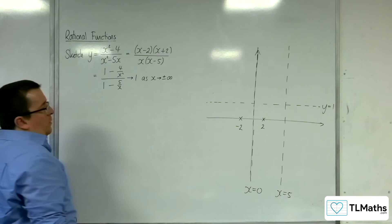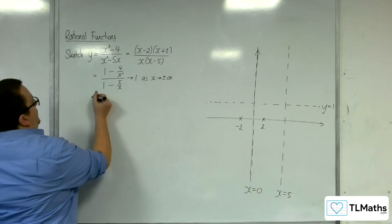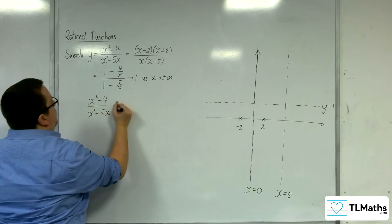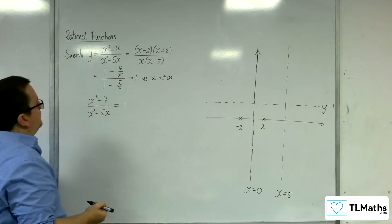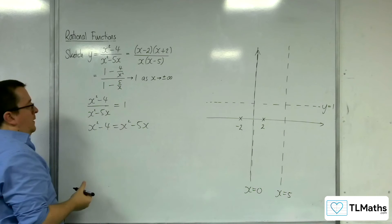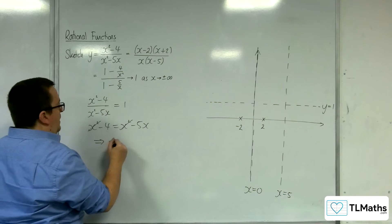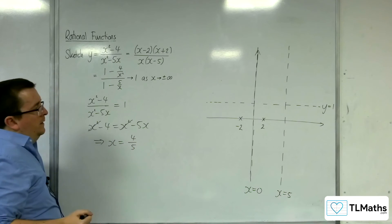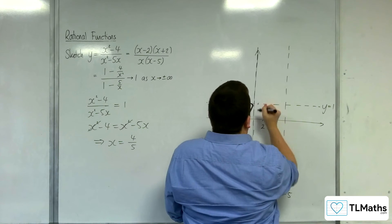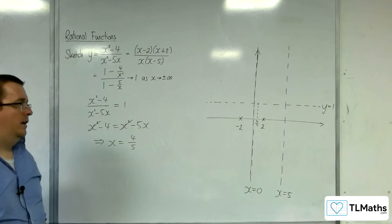So now what I would want to do is figure out where it crosses the horizontal asymptote. So I'm going to put x squared minus 4 over x squared minus 5x equal to 1, the horizontal asymptote. So multiply up, take x squared from both sides, divide through by minus 5, and we're going to get x is equal to 4 fifths. So x equals 4 fifths is where it's going to be crossing, somewhere there. That's where it's crossing y equals 1.